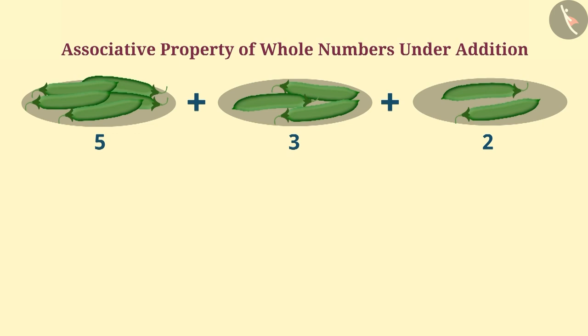One way to add them is to first make a group of 5 and 3 and add 2 to their sum. Or first, we will make a group of 3 and 2 and then add 5 to the resultant sum. No matter how we group the numbers, the result of addition will be the same.